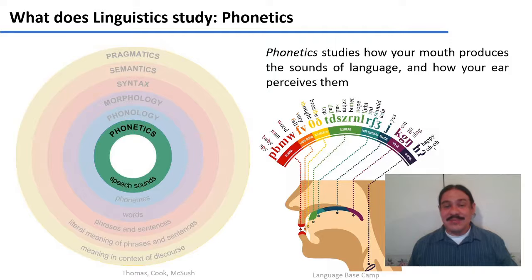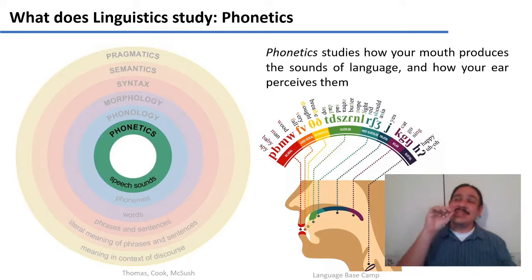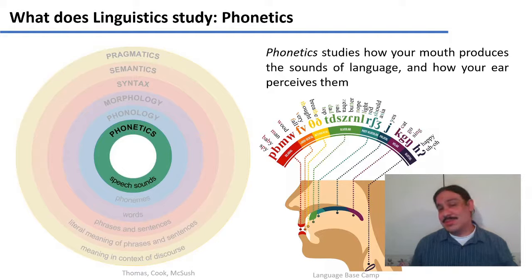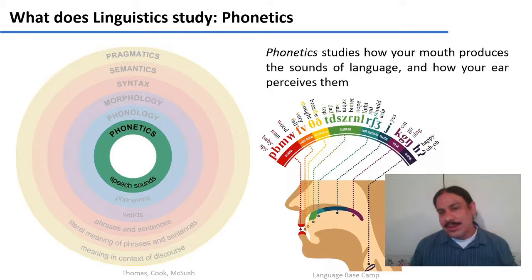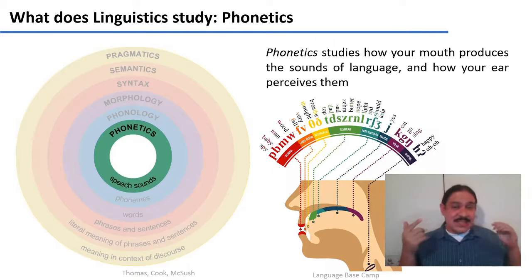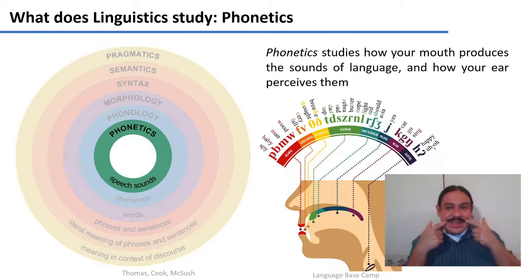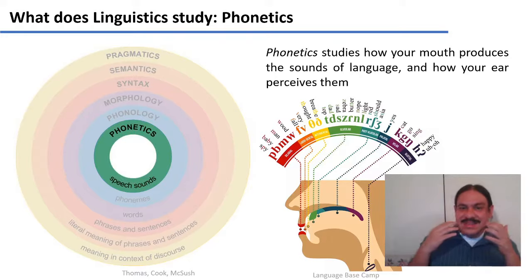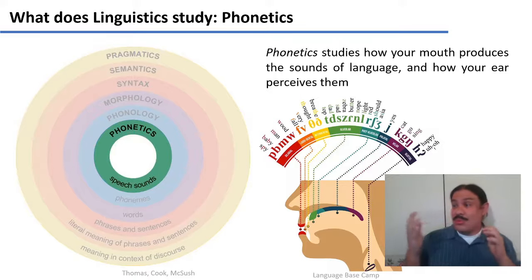Alveolar sounds have your tongue — the tip of your tongue — placed behind your teeth. There's a small region on top of your teeth that is like a little bump; that's the alveolar region. That's where your tongue goes when you say the T of 'top', or the S in 'sad', or the N in 'nope'. Each of those positions has a configuration of your lips and your tongue, and those combinations make the different sounds of human languages. That's phonetics — how sound is produced in your mouth or on your hands.